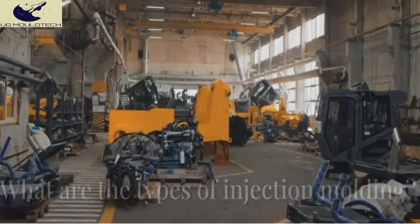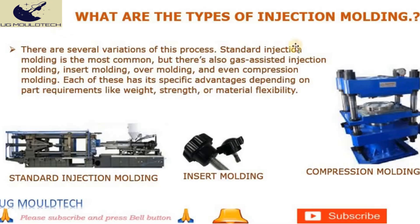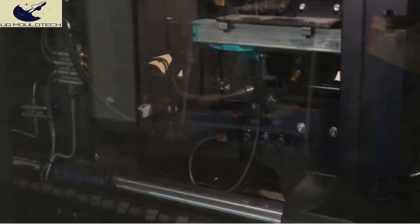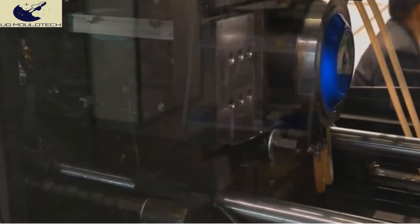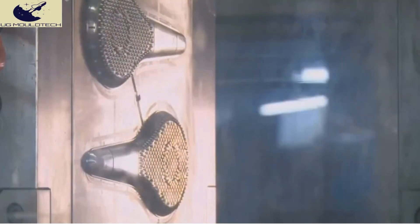Question 2: What are the types of injection molding? There are several variations of this process. Standard injection molding is the most common, but there's also gas-assisted injection molding, insert molding, overmolding, and even compression molding. Each of these has its specific advantages depending on part requirements like weight, strength, or material flexibility.